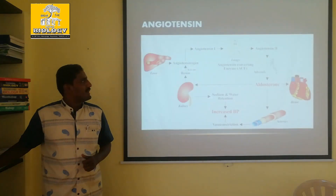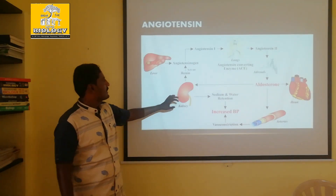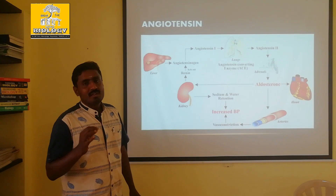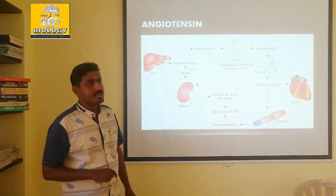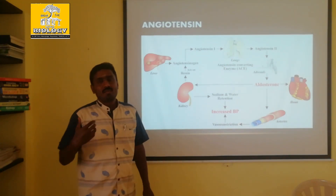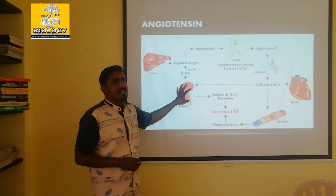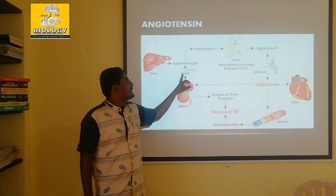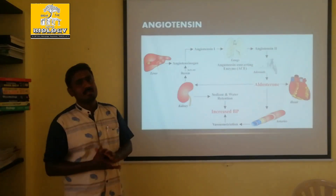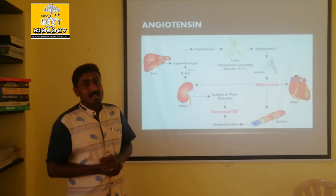Not only blood pressure, but the full role of angiotensin involves the kidney. The kidney produces renin which steps up blood pressure. The liver produces angiotensinogen, and the kidney produces renin.